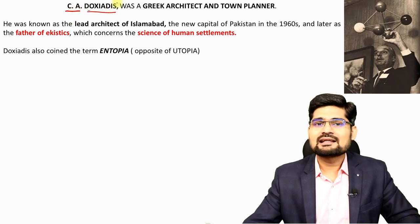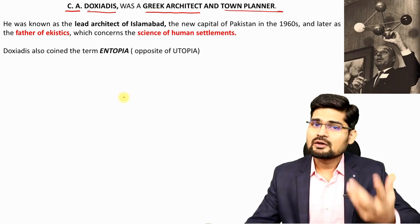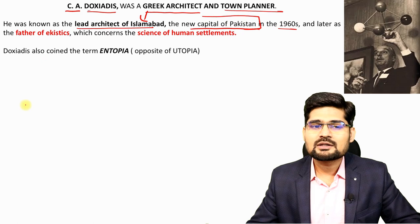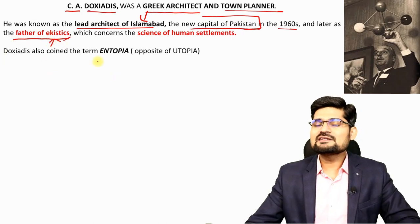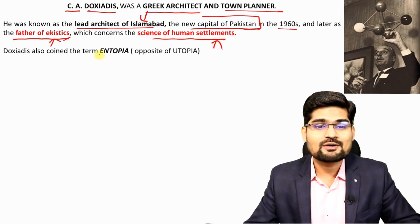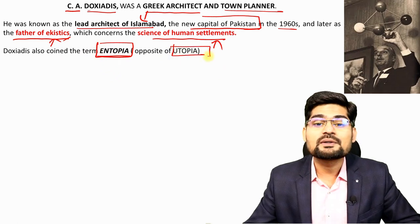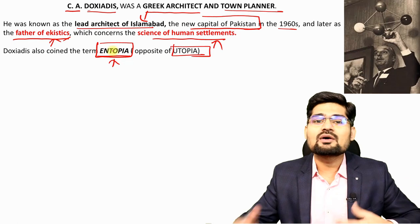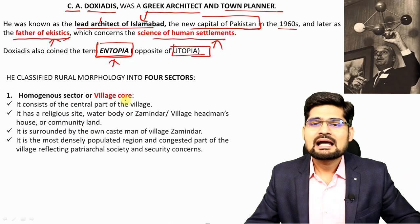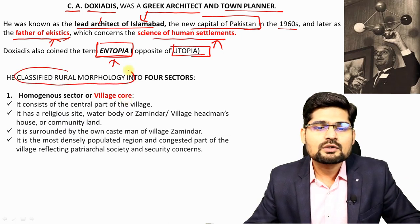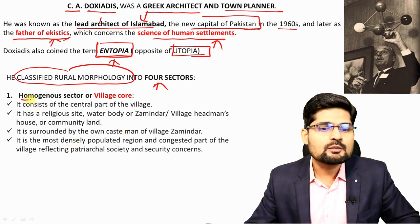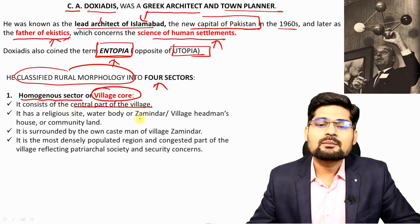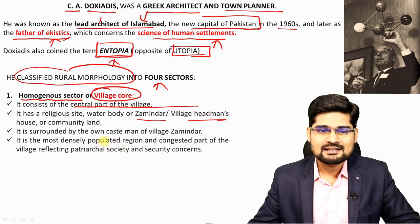In the western context, scholar C.A. Doxiadis — a Greek architect and town planner, famously known as the lead architect of Islamabad city in the 1960s and also known as the father of Ekistics (the science of human settlements) — coined the interesting word 'entopia,' meaning the existing state, as opposed to utopia, the ideal state. Doxiadis classified rural morphology into four sectors. The first is the homogeneous sector — the village core — where the central part of the village is owned by upper caste zamindars, village headmen, and community heads, surrounded by people of the same caste.